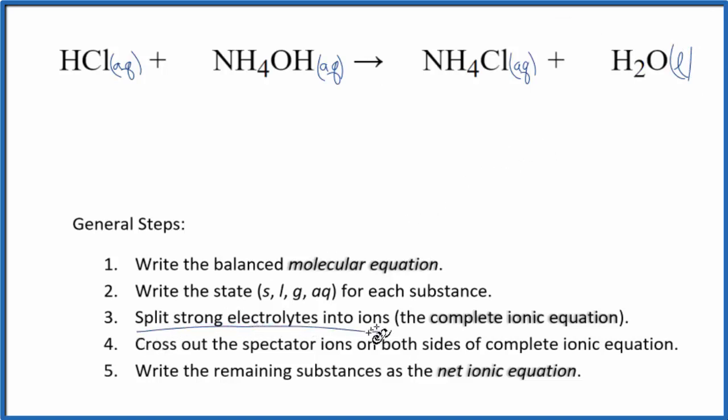Now we can split the strong electrolytes apart into their ions, that gives us the complete or total ionic equation. Hydrogen, group one, has a one plus ionic charge and then the chloride ion one minus. So we have H plus, and I'll write the states at the end, plus the chloride ion Cl minus.